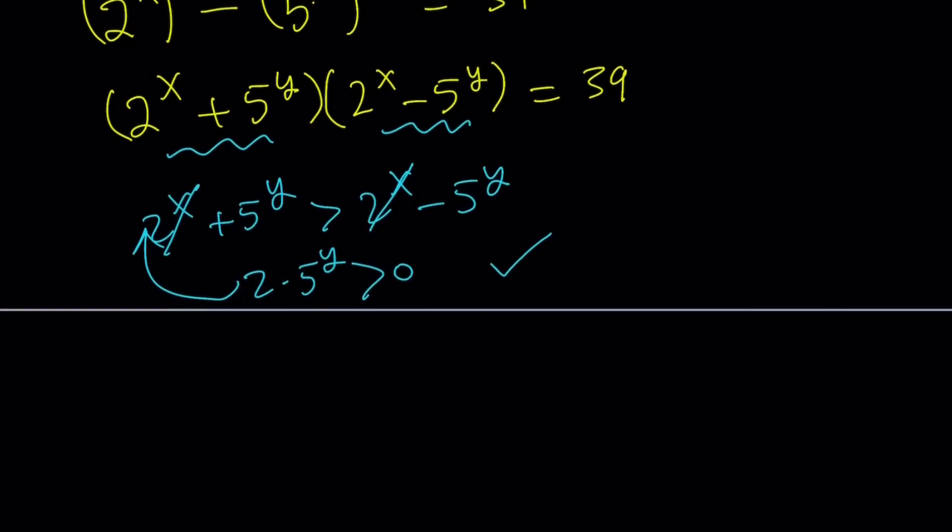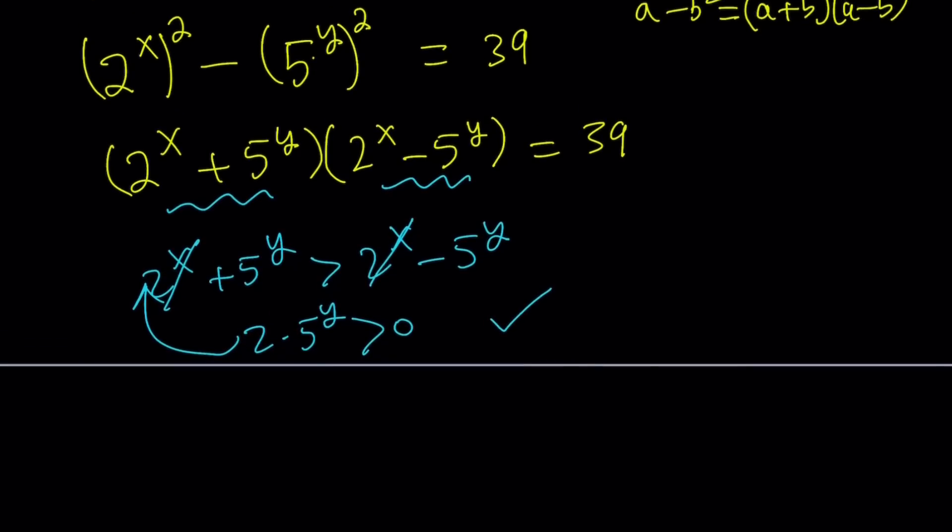We're going to factor 39. 39 can be factored in a few number of ways, but we have to make sure that the first factor is always larger. 39 is not a perfect square, so they're not going to be equal. This can be 39 times 1 or 13 times 3. Since 39 is a product of 2 primes, those are the only two ways we can factor it. The first factor is going to be greater.